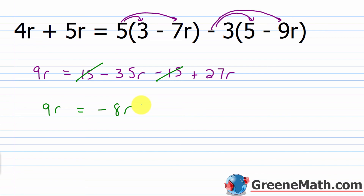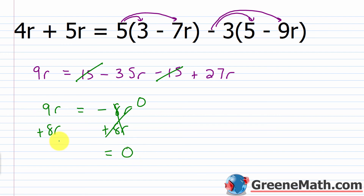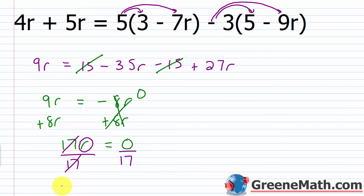Now I move all variable terms to one side. I add 8R to both sides: negative 8R plus 8R is 0 on the right, and 9R plus 8R is 17R on the left. So 17R equals 0. To isolate R, I divide both sides by 17: this gives R equals 0 over 17, which is 0. My solution set contains one element: {0}.